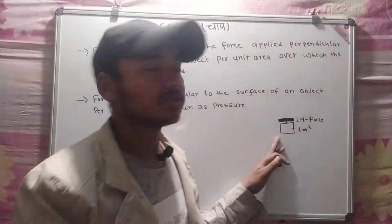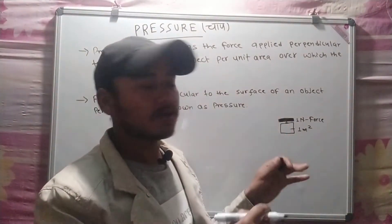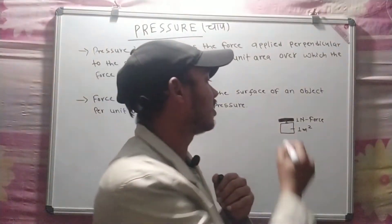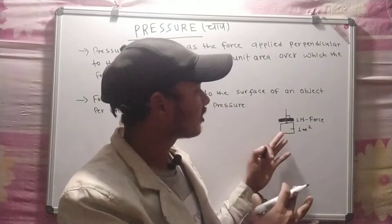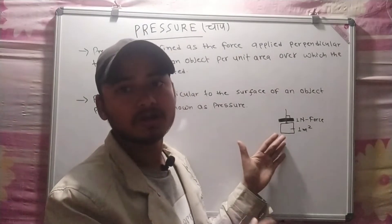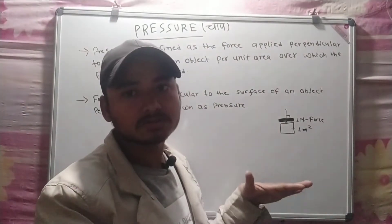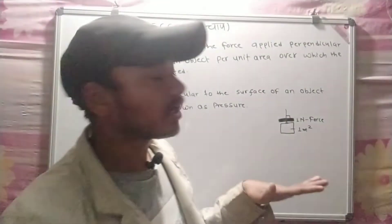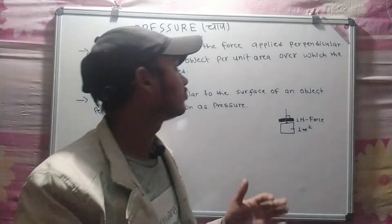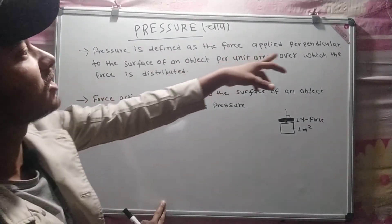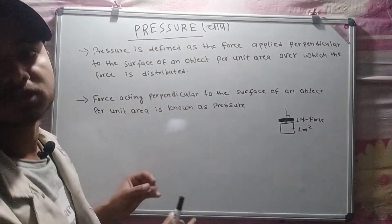Here we go — we can see the area is 1 meter square, the force is 1 Newton, and the direction is perpendicular. Pressure is defined as the force applied perpendicular to the surface of an object per unit area over which the force is distributed.